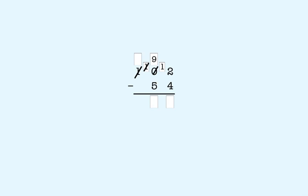In the ones place, we now have 12 minus 4, which is 8. Now the tens place — we have 9 minus 5, which is 4. So we put a 4 in the answer box in the tens place. In the hundreds place, we don't have any hundreds left. That means we're done. The answer is 48.